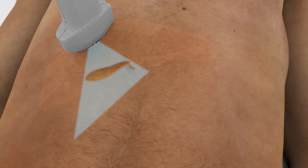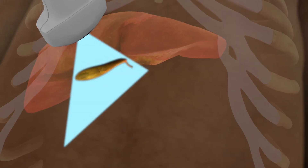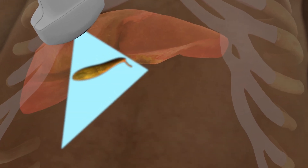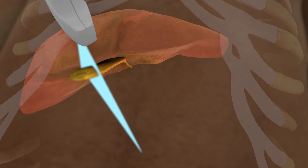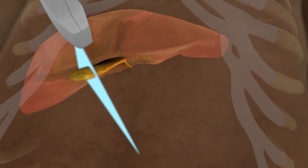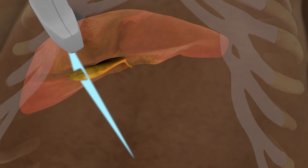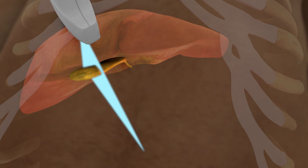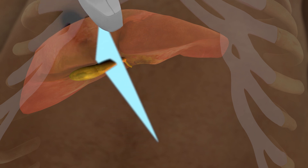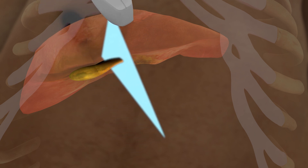Once the longitudinal view of the gallbladder has been obtained, rotate the probe 90 degrees counterclockwise to obtain a transverse view. The probe marker should be pointing toward the patient's right. Scan through the entirety of the fundus, body, and neck of the gallbladder to assess for any pathology in the lumen.